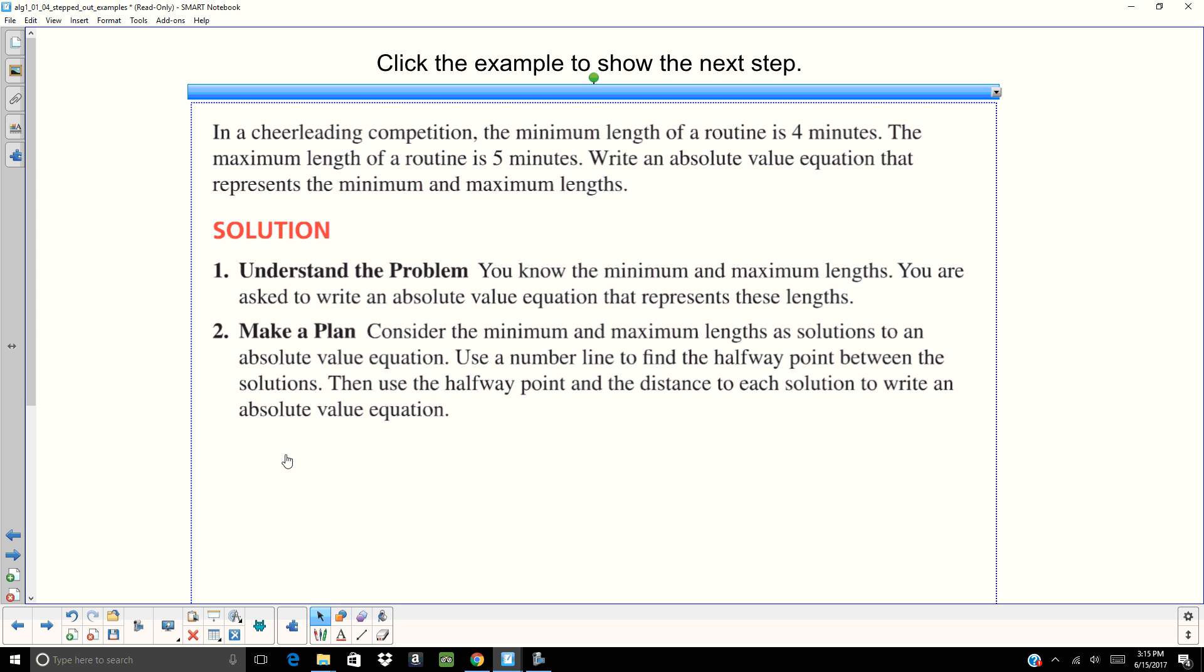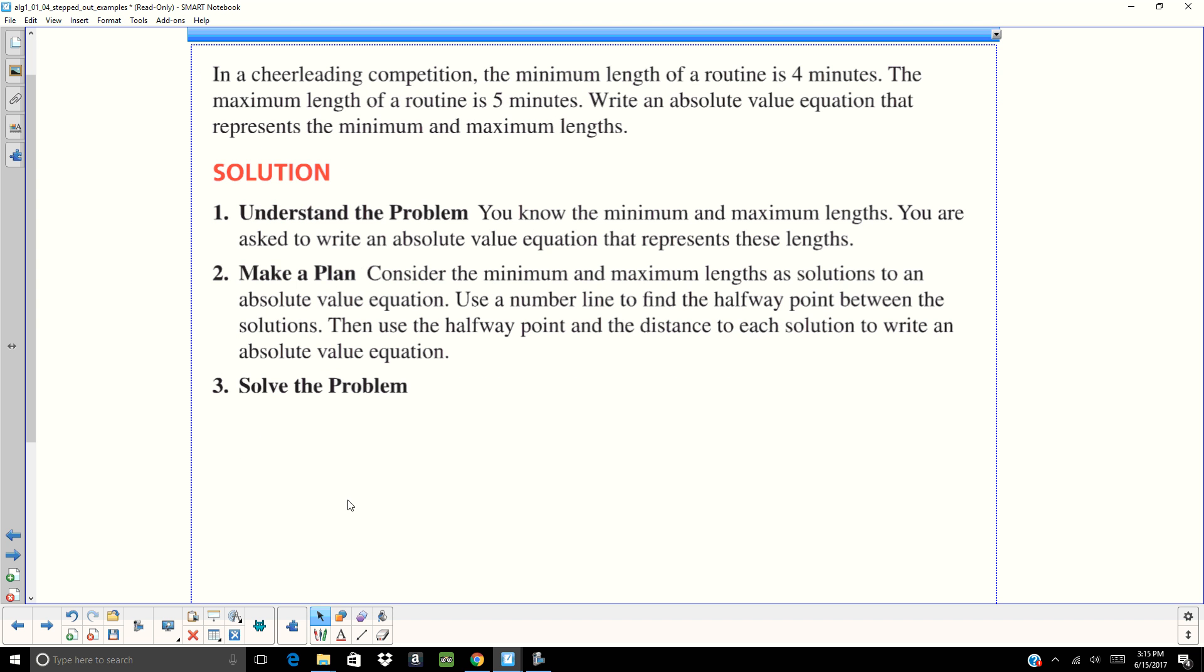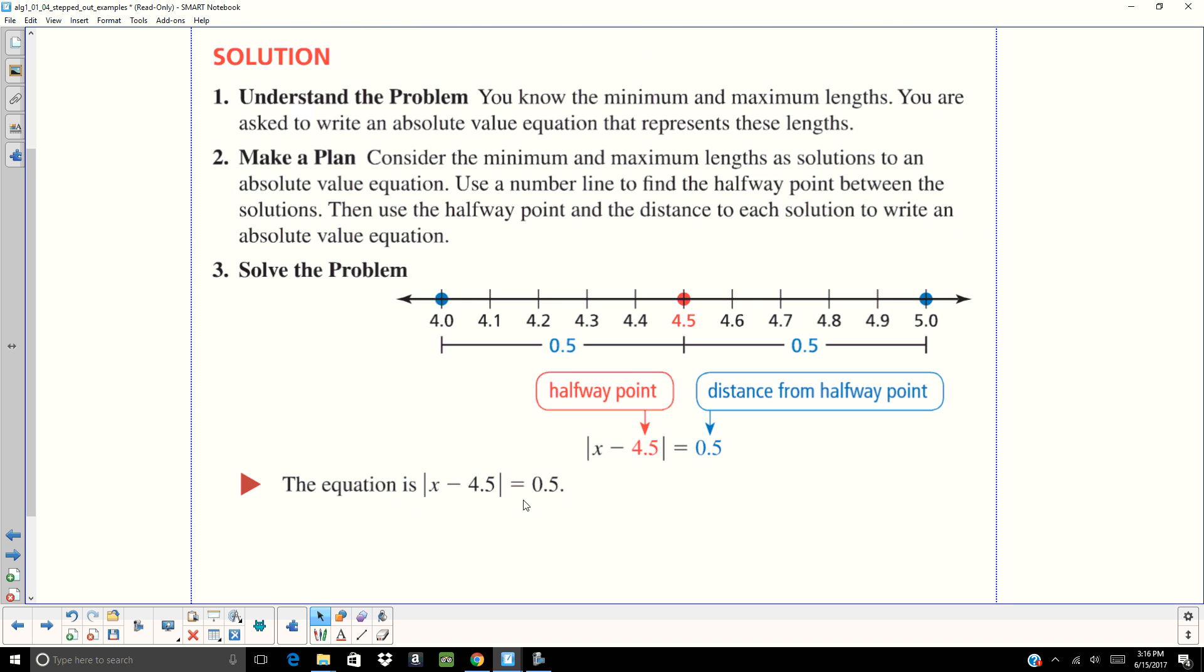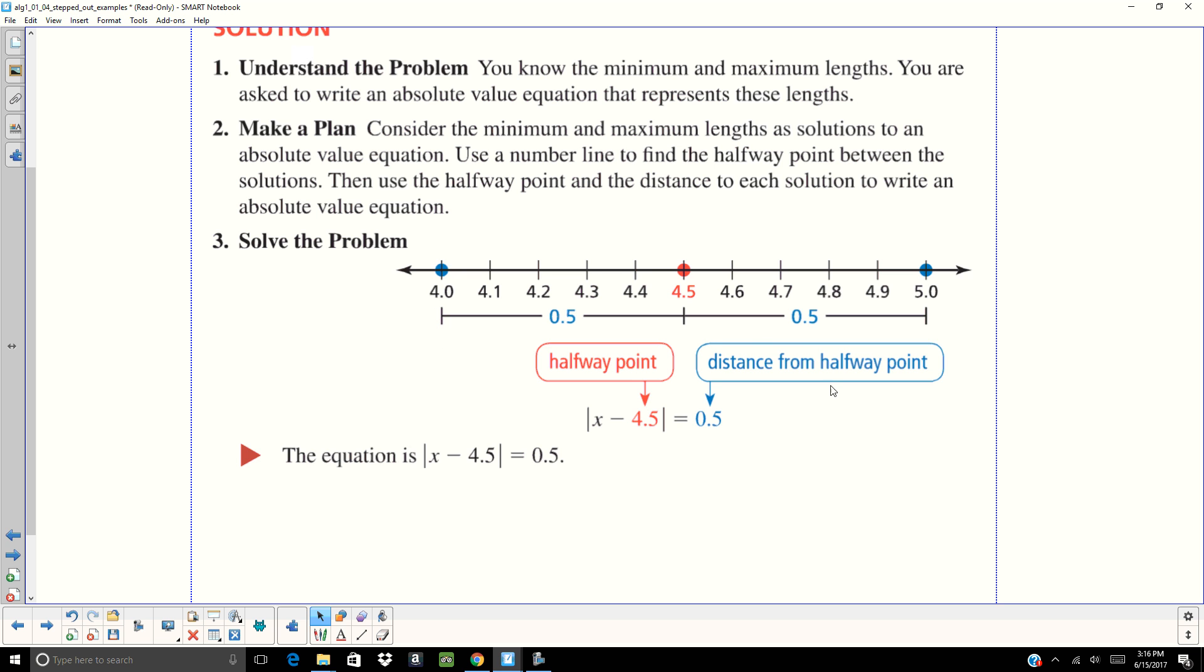So we need to consider those. And then we should look at a number line and find the halfway point between those two solutions. So the minimum is 4, the maximum of 5. Halfway in between is 4.5. And that distance is 0.5 away. So 4 is 0.5 units away from 4.5. 5 is 0.5 units away from 4.5. So X minus 4.5 equals 0.5. And that's what that absolute value is. It's the distance from the halfway point. There's our equation right there. And if we were to solve it, you get 4 and 5.